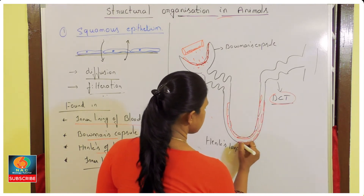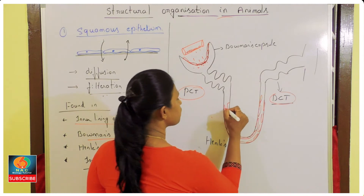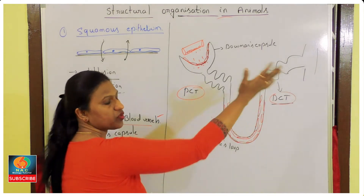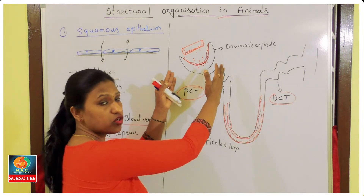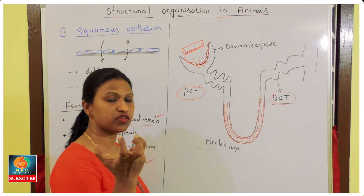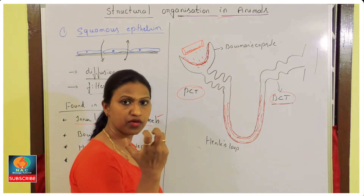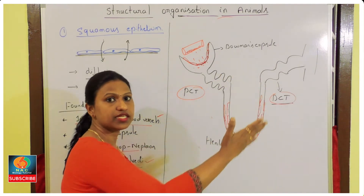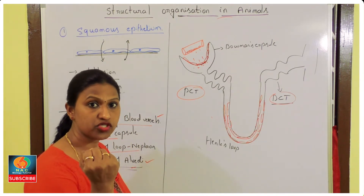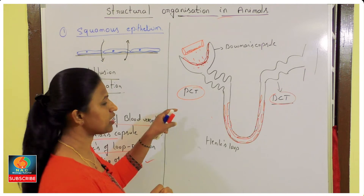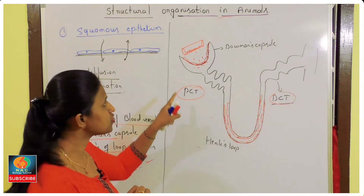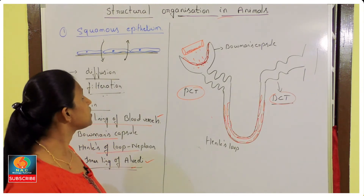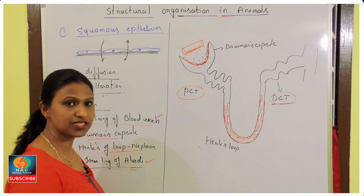The main function of squamous epithelium is performing diffusion as well as filtration. Most of the water molecules collected in the Bowman's capsule will be absorbed in the PCT region along with certain essential molecules like glucose, sodium, potassium — but that function is carried by cuboidal epithelium, not squamous. That's what we will study next.